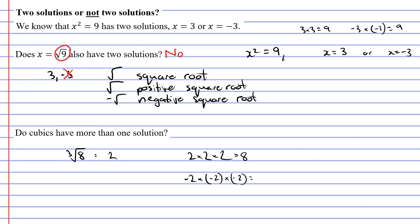Well, negative 2 times negative 2 is actually positive 4. And 4 times negative 2 actually equals negative 8. Negative 2 is not a solution to the cubed root of 8. Instead, negative 2 comes from the cubed root of negative 8.